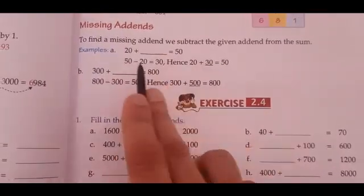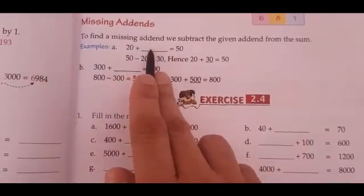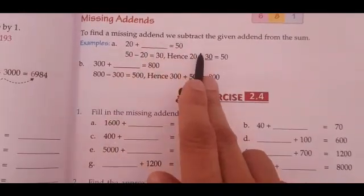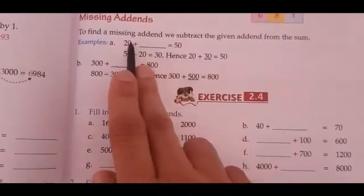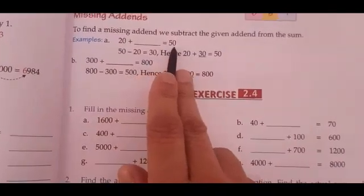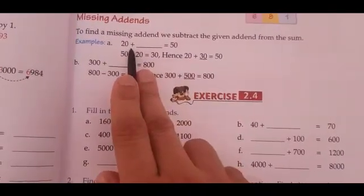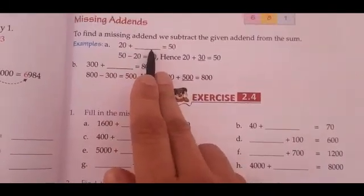This means that to find this, the number goes to the other side and we subtract from 50 to find the blank. From the total, if I subtract one part, we get to know the answer of the other part.